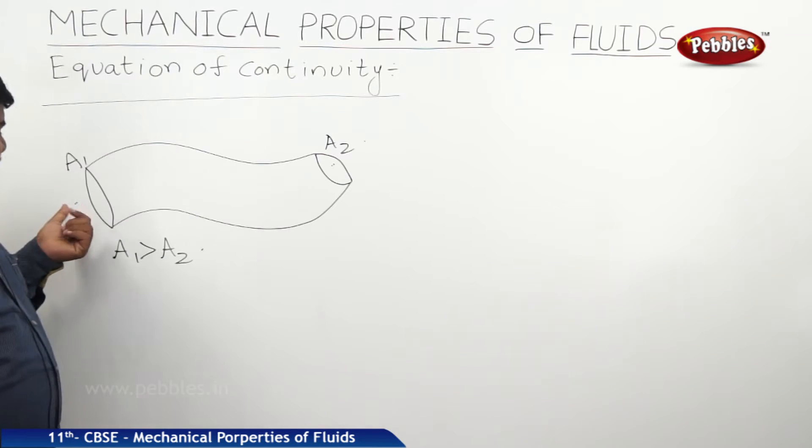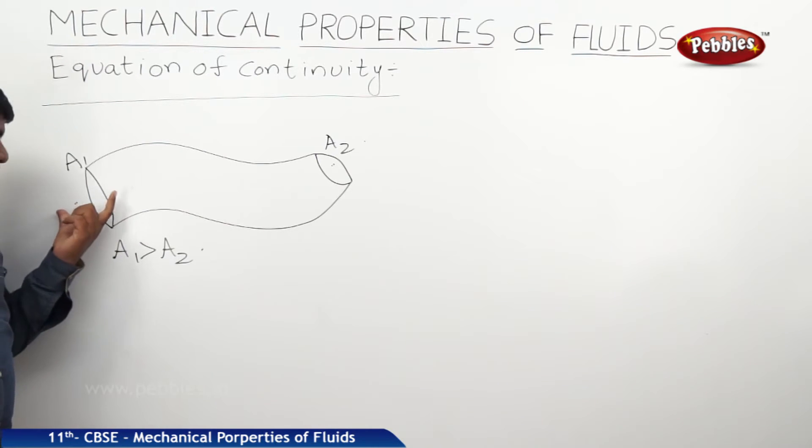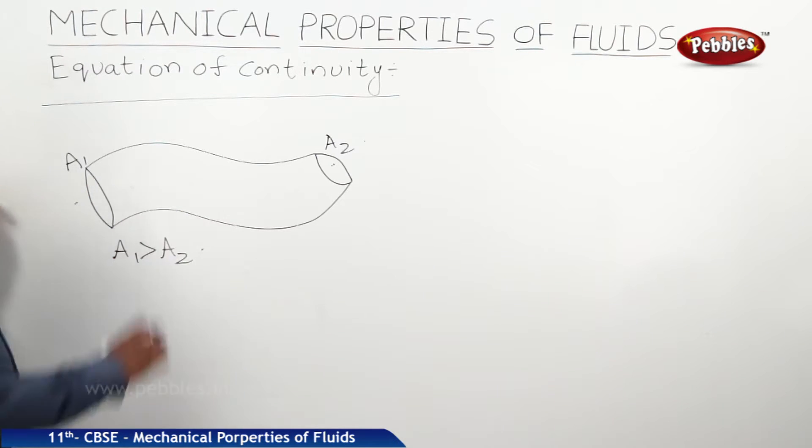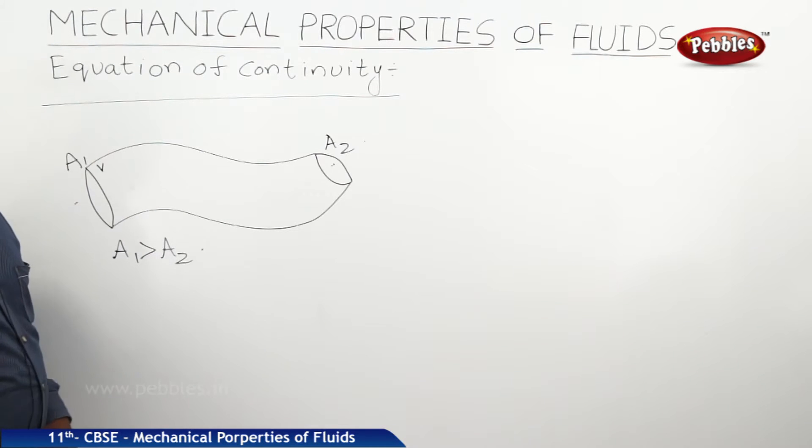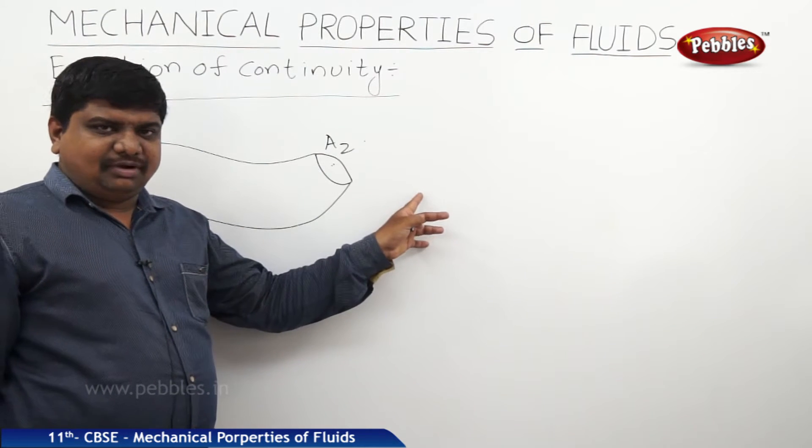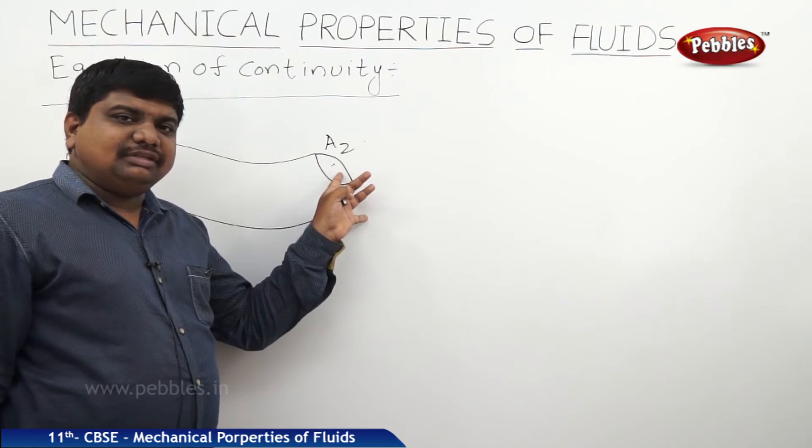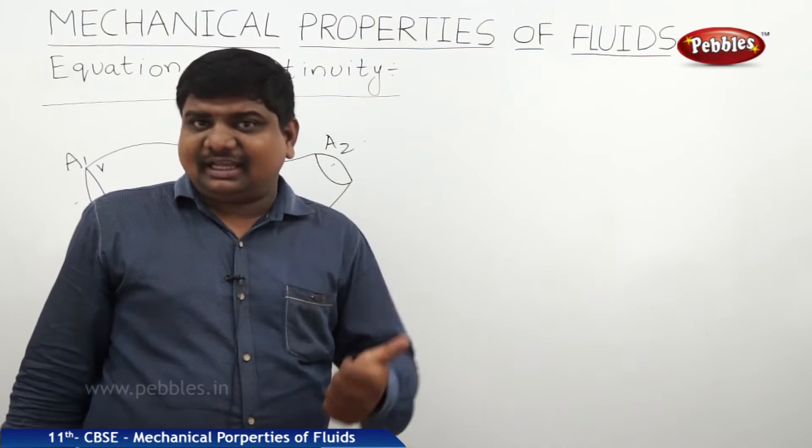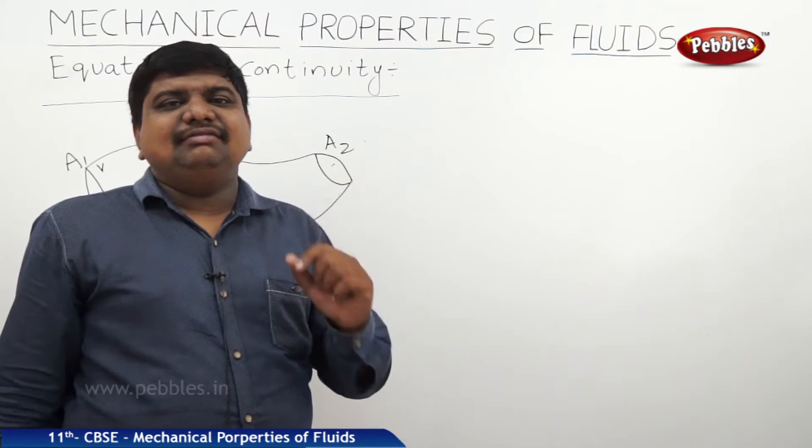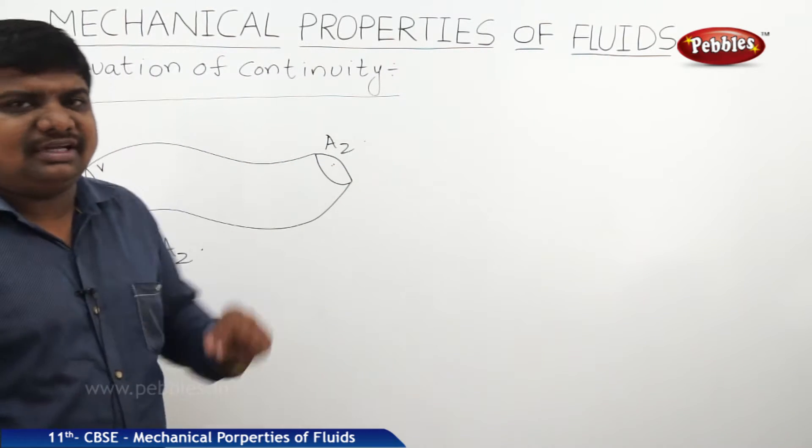If you consider the speed of the efflux, the speed of the fluid when entering the tube is less at A1. But when it comes out as efflux at A2, it has greater velocity. That means the velocity of efflux is inversely proportional to the area of cross section of the tube.